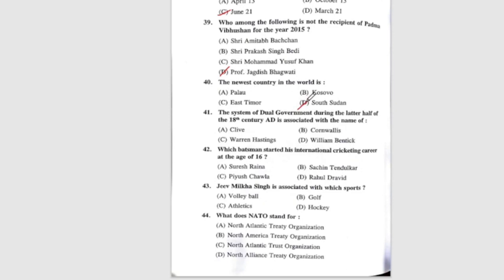Question 41: The system of dual government during the later half of the 18th century AD is associated with the name of — the correct answer is option A, Robert Clive. Question 42: Which batsman started his international cricketing career at the age of 16? The correct answer is B, Sachin Tendulkar.